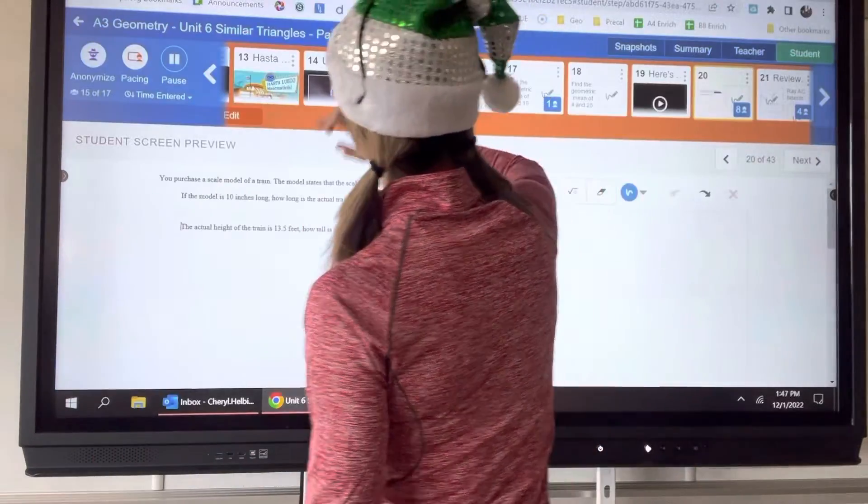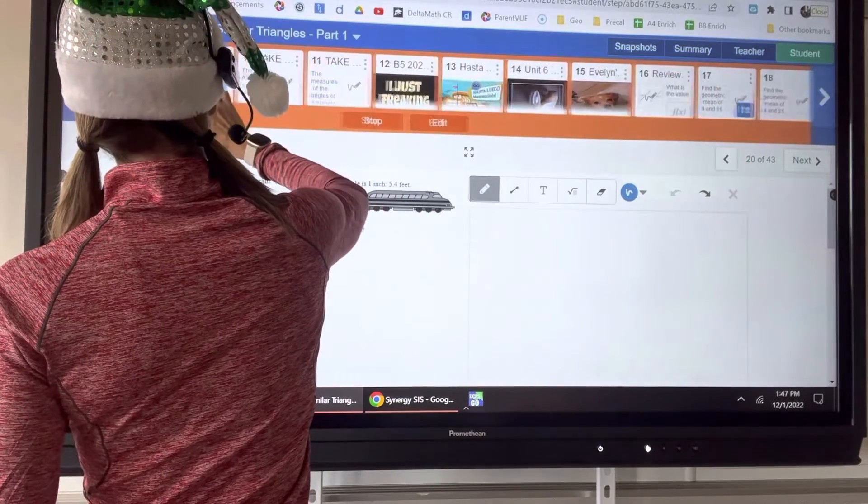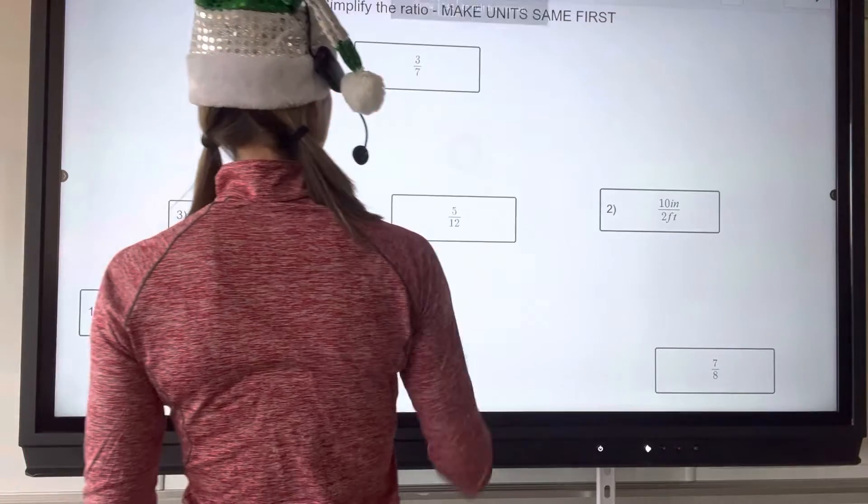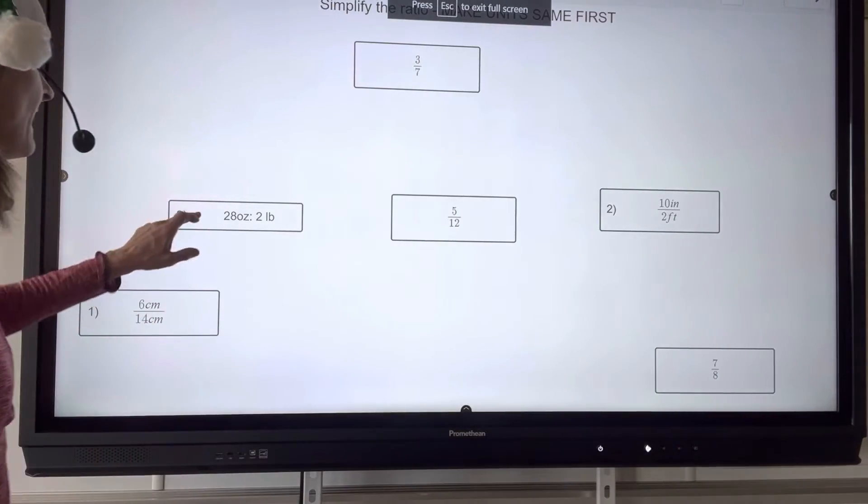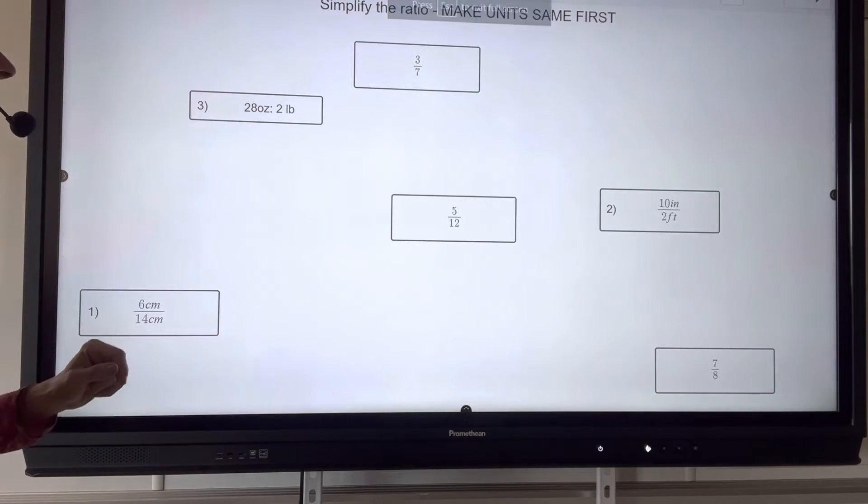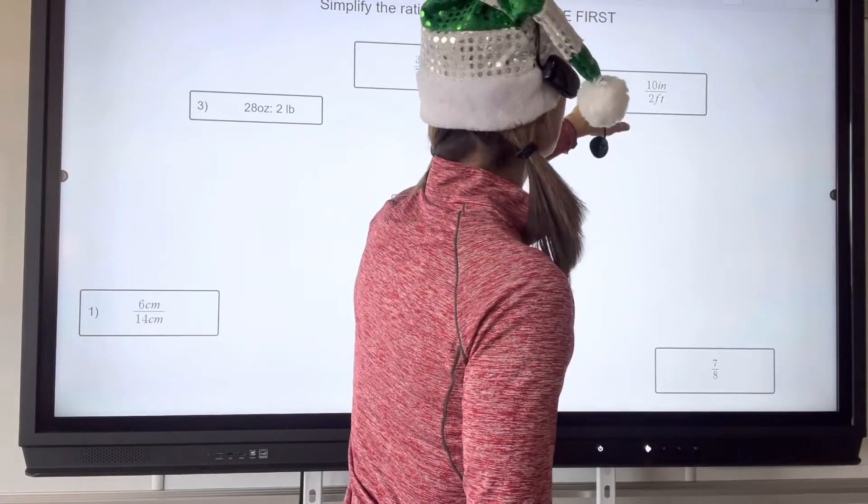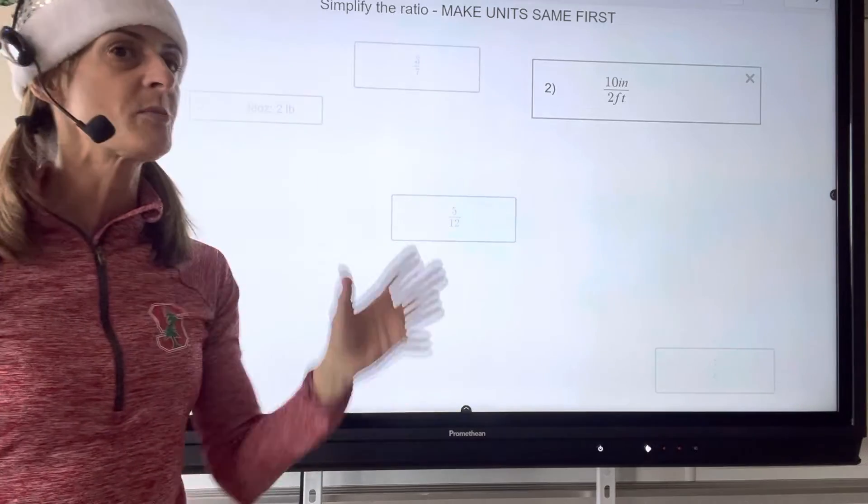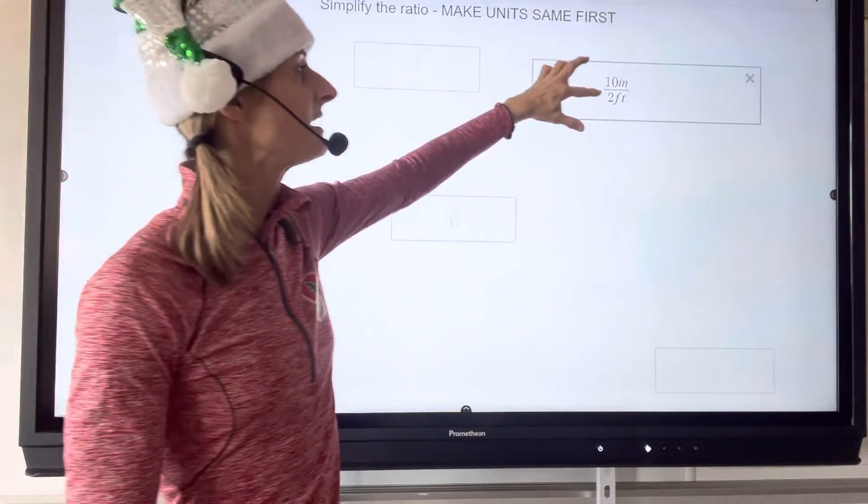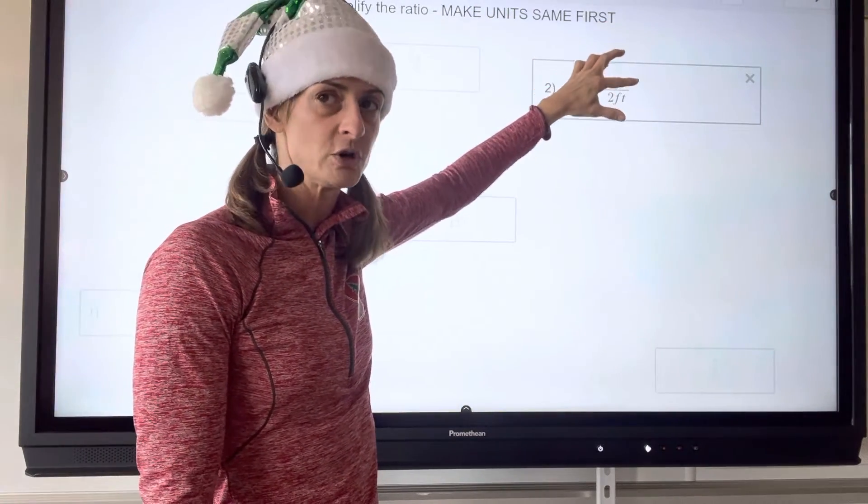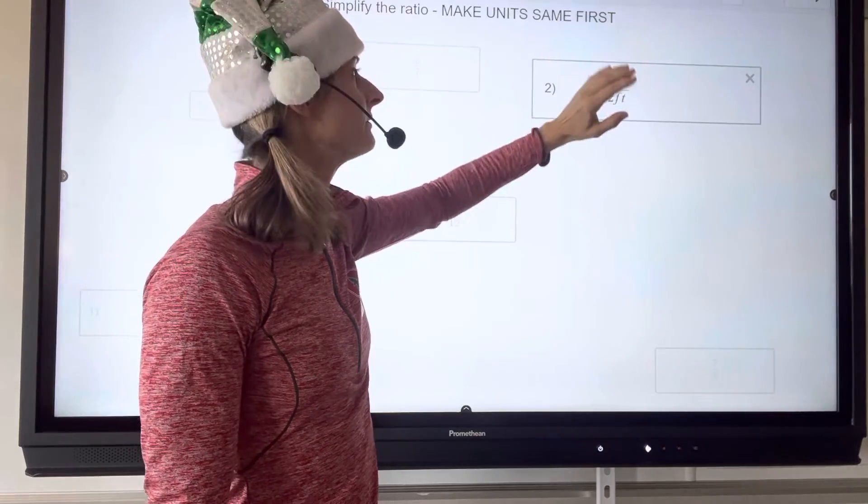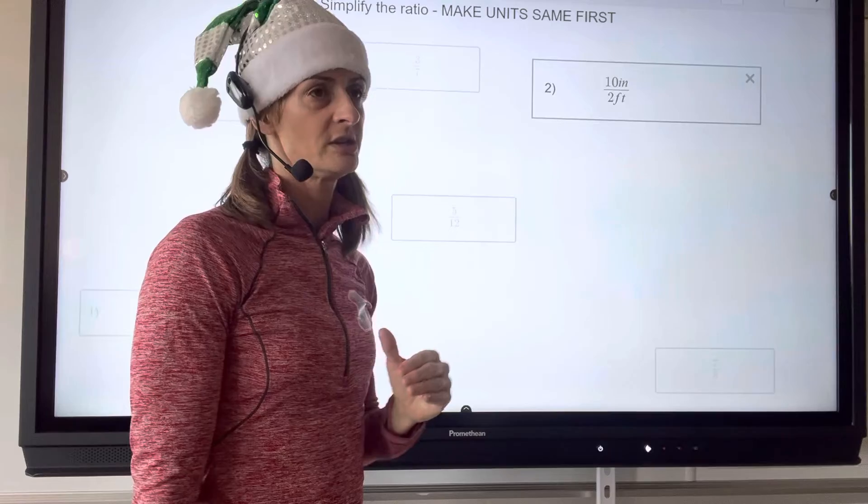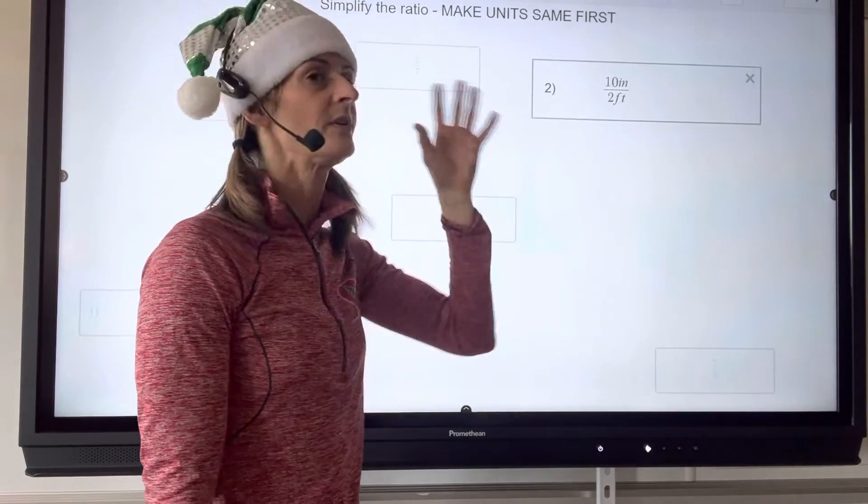But take it back to yesterday. Yes. Where we just had ratios, right? And we had to simplify the ratio. You're going to simplify that ratio. It's not in a proportion. You've got to make the units the same first. First, you have to change two feet to 24 inches. Then the inches cancel and then you can simplify.